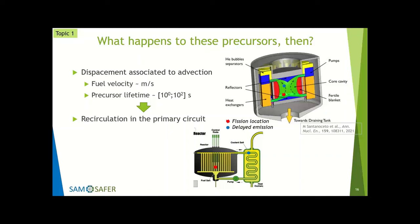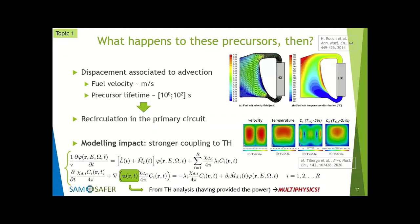This is a strong multiphysics problem: even to solve these neutronics equations, you need information on the velocity field from thermal hydraulic analysis, which in turn needs the power provided by fission. The colorful pictures show MSFR results for fuel salt velocity and temperature — velocity of around 2 m/s is reasonable. You also see how a multiphysics simulation must involve velocity, temperature, and concentration of precursors, which look quite different depending on their decay time.